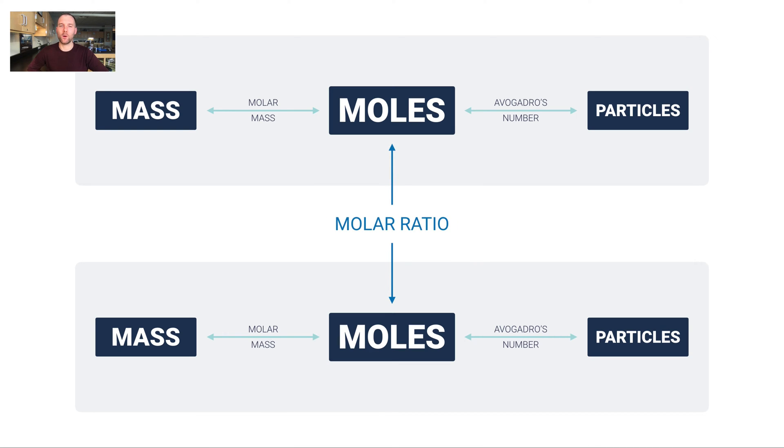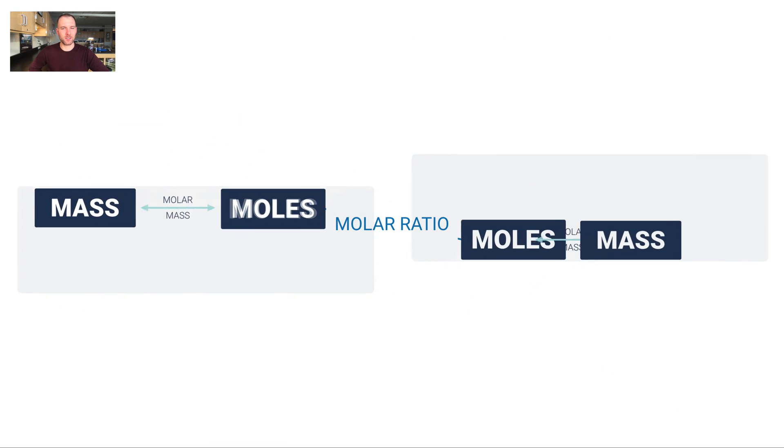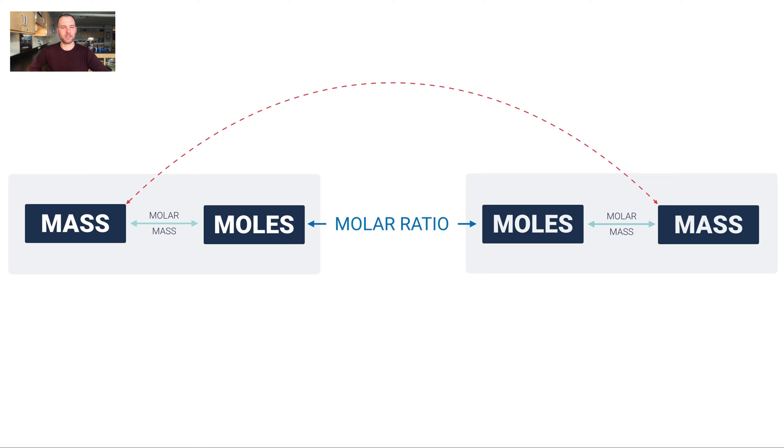We get that by looking at the coefficients from the balanced equation that contains these two substances we're comparing. As I just mentioned, going from mass of one thing to mass of something else is the most common type of calculation in stoichiometry. So let me just get rid of particles for a second, although you could certainly go to particles or come from particles in your conversion work. Let me just modify this so that we're really looking from mass of one thing to mass of something else.